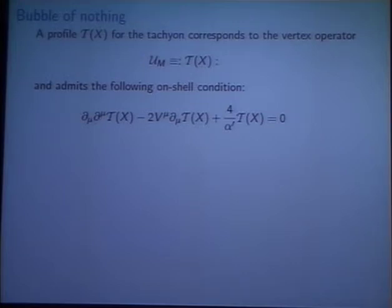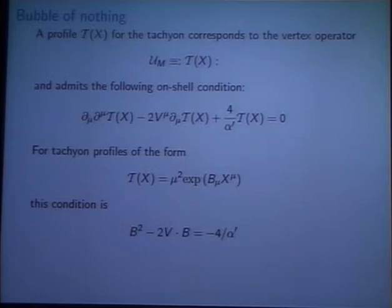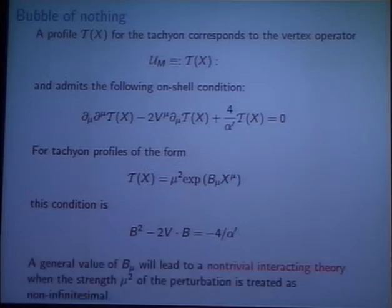At the linearized level, that reduces to this free equation of motion for the tachyon: ∂²T minus 2 dilaton gradient dot ∂T plus 4 over α' of T equals 0. That's just a linearized condition, but it's where we will start. So for tachyon profiles which are exponential, real exponentials, there's some condition on the exponent: b² minus 2V·b is minus 4 over α'. But in general, a general value of b satisfying the on-shell equation isn't going to be a full solution, it's just a linearized solution. At higher orders of conformal perturbation theory and the α' expansion, there are singularities when insertions of the potential approach each other.